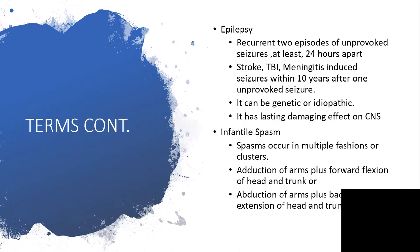Epilepsy on the other hand is a form of recurrent two episodes of unprovoked seizures at least 24 hours apart. There is possibility of stroke, traumatic brain injury, meningitis induced seizures if it is occurring within 10 years after one unprovoked seizure. It can be genetic in origin or we don't know the cause and we target it as idiopathic. It has lasting damaging effects on central nervous system.